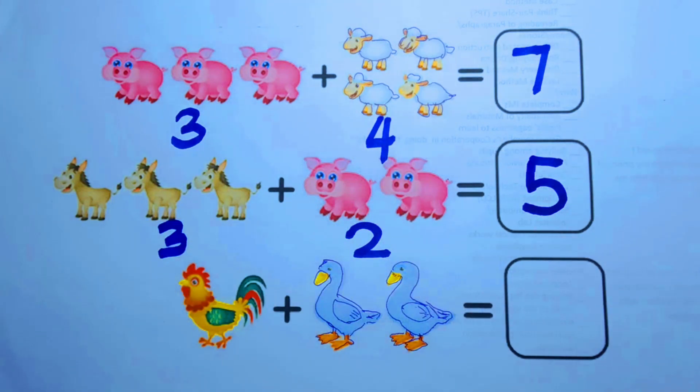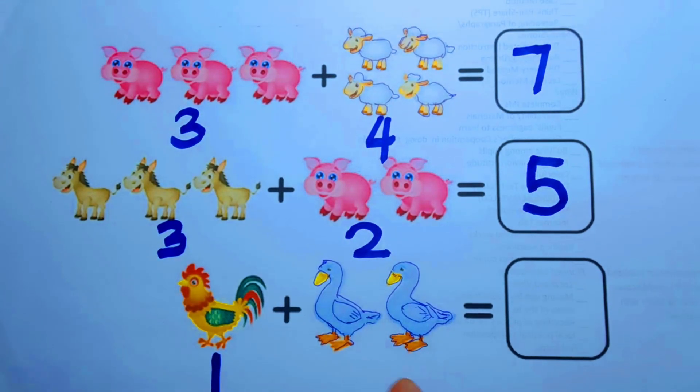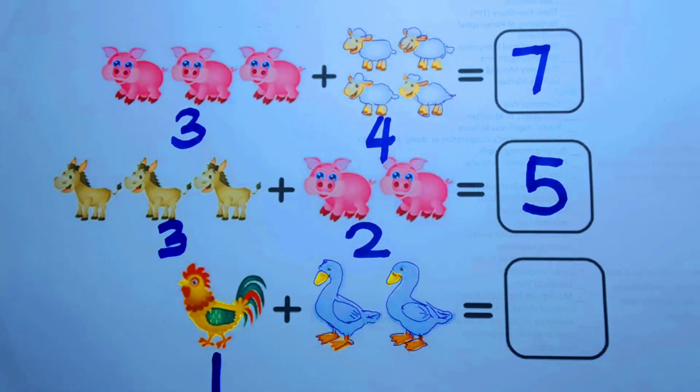Next is the rooster and the ducks. Let's count. One rooster. The ducks. One, two. Two ducks.